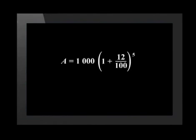Let's do the same calculation we did just now by substituting our numbers into the formula. A equals 1,000 multiplied by one plus 12 divided by 100, to the power of 5. Now let's work out the answer. Remember, we need to first calculate the value inside the brackets, then to the power of 5, then times 1,000. You should get the same answer as when we did it the long way.